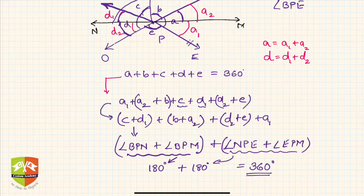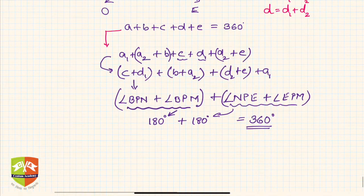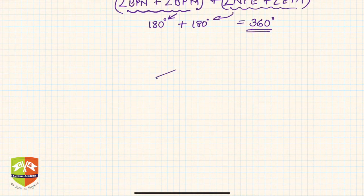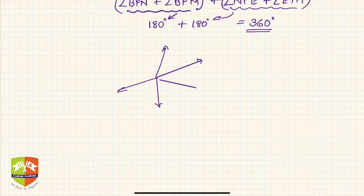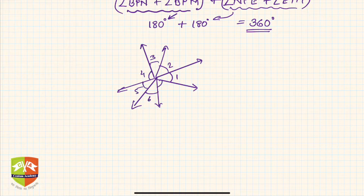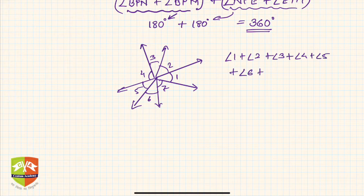Now this is what you have to prove. So hence at any point, however many numbers of rays are there, it doesn't matter. So let's say these are all different rays, all originating from the same point. So let's say this is 1, this is 2, this is 3, this is 4, this is 5, this is 6, this is 7. So angle 1 plus angle 2 plus angle 3 plus angle 4 plus angle 5 plus angle 6 plus angle 7 will always be equal to 360 degrees.